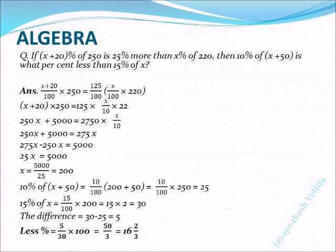10% of (x + 50) = (10/100) × (200 + 50), where x = 200, equals (10/100) × 250. Zeros on the numerator and denominator cancel, we get 25.